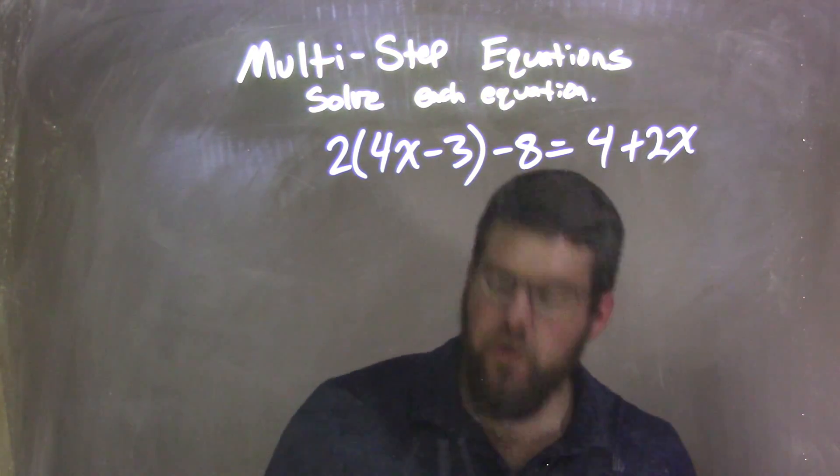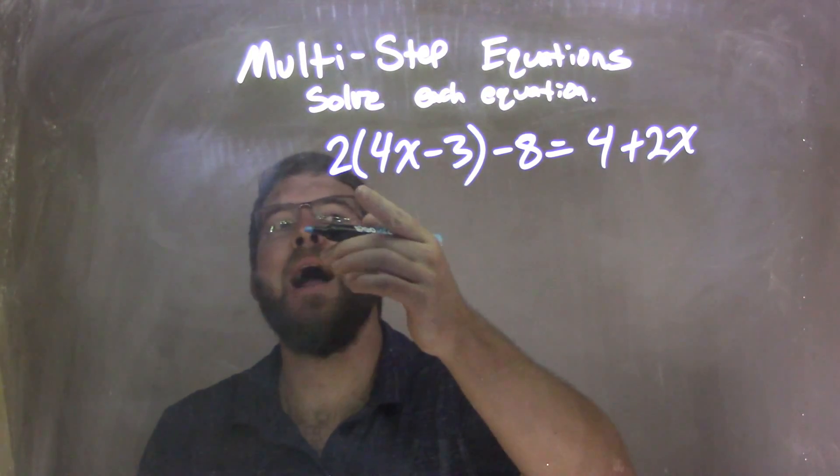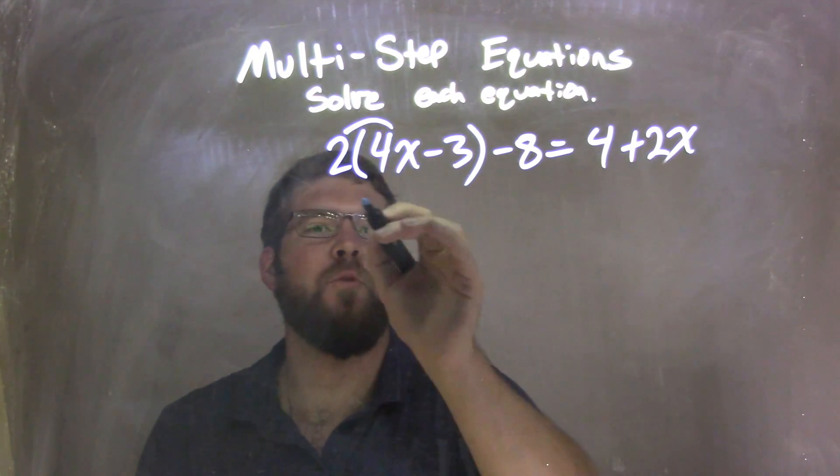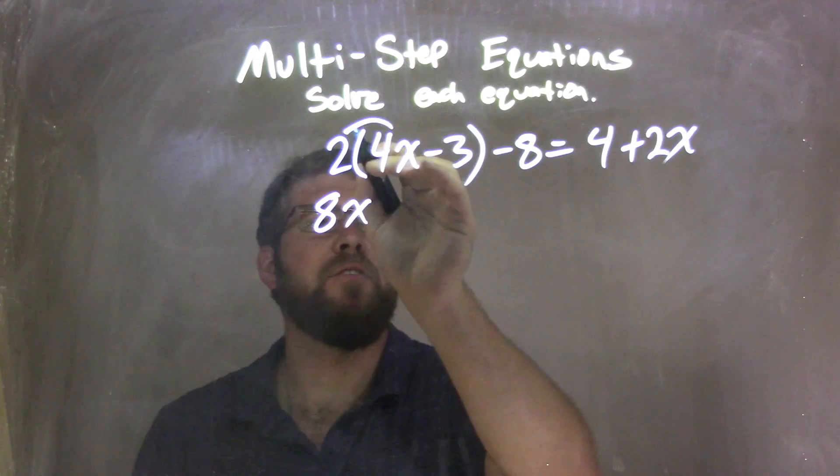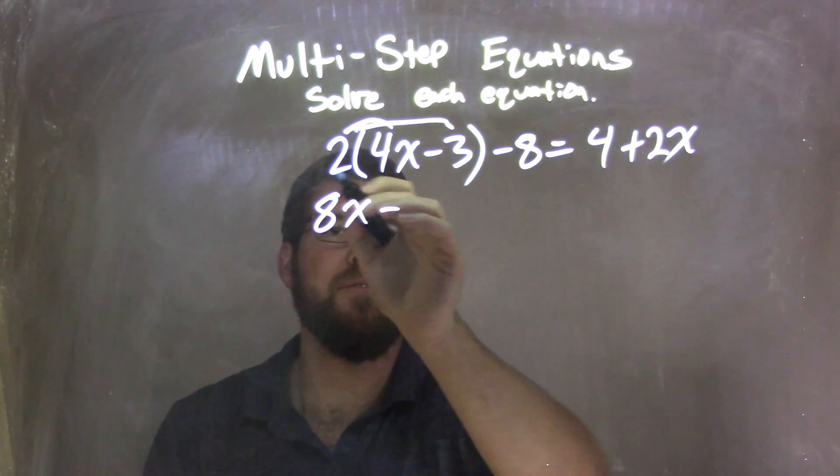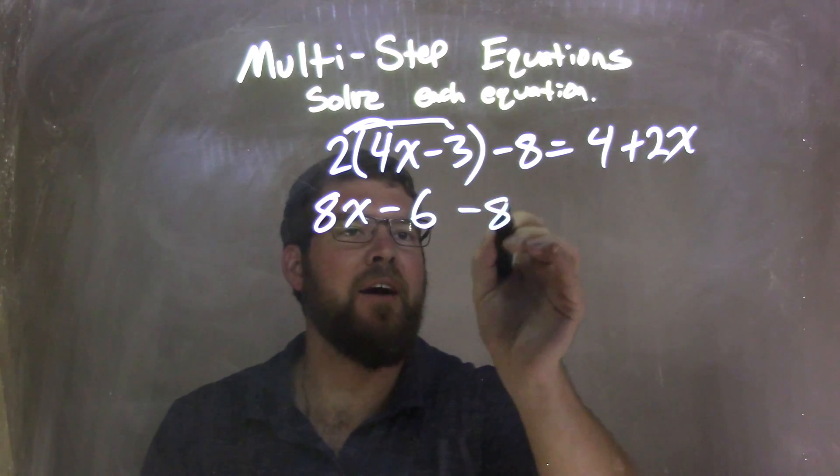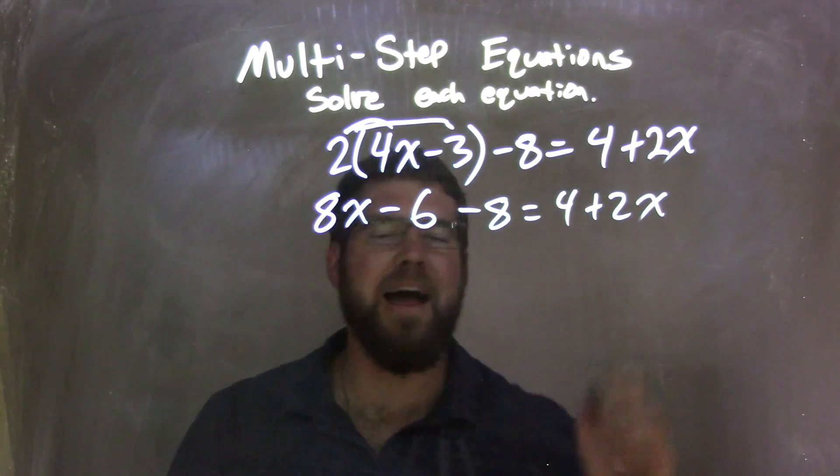Well, first things first. I'm not the realist, but I'm going to distribute this 2 across. So the 2, I'm going to write 2 times 4x, which is 8x. 2 times 3, so 2 times 3 is 6, make sure it's a minus sign. Then we have a minus 8 on the outside, equals 4 plus 2x.